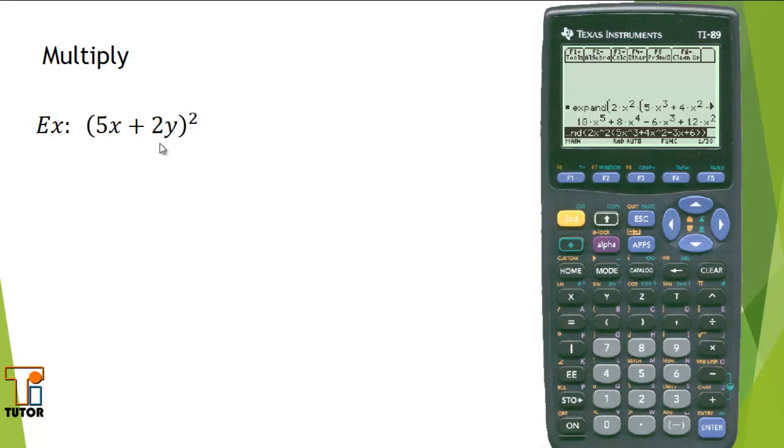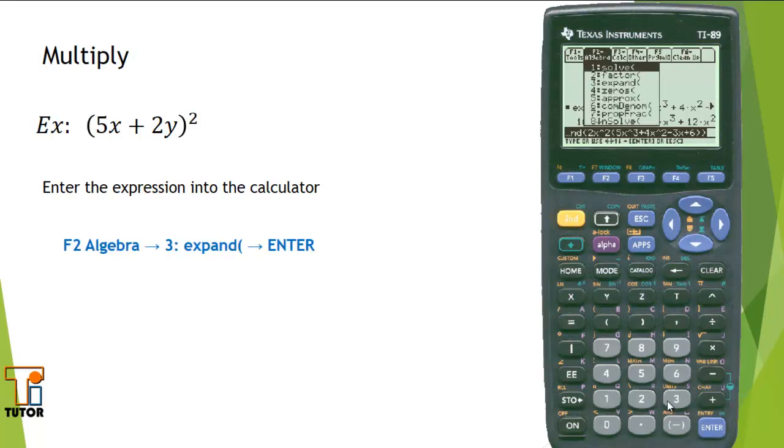5x plus 2y, quantity squared. So as before, we'll enter the expression into the calculator. Again, I'll press F2. And this time, I'm going to simply press the number 3, and if I do so, I don't have to press the ENTER key.